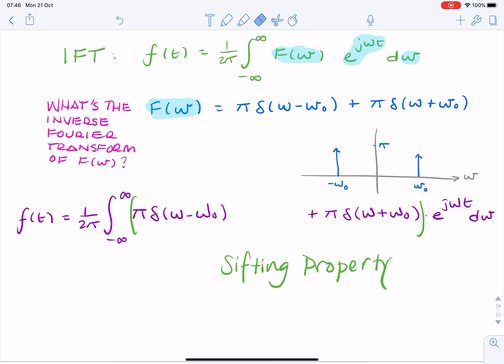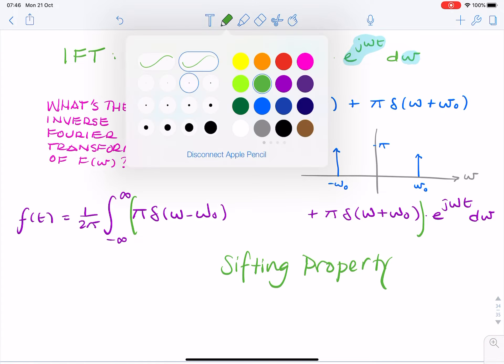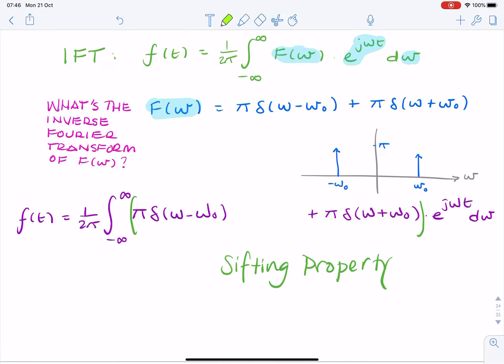So that allows us to take the value of omega for which the delta Dirac function is not zero, and replace that instead of omega in the complex exponential. So, I can rewrite this as two integrals. So that's why I left the space.